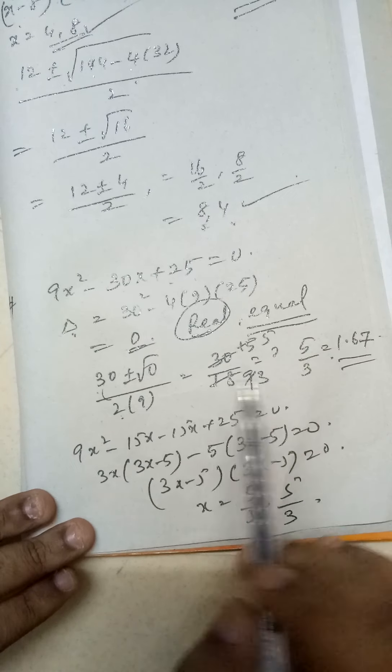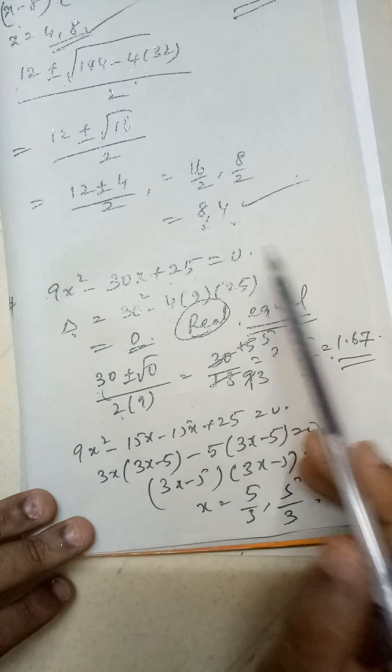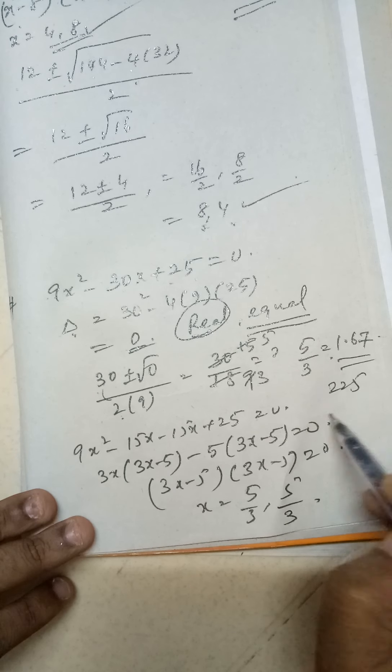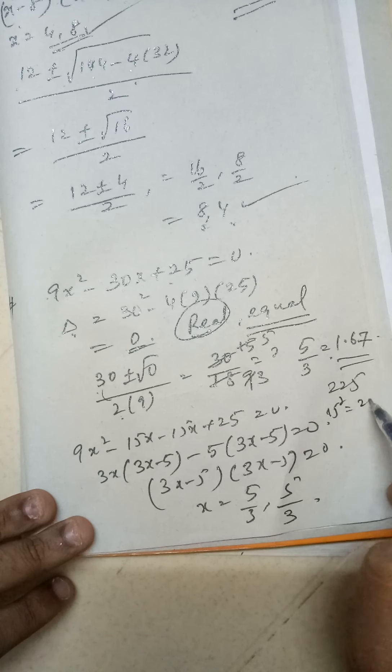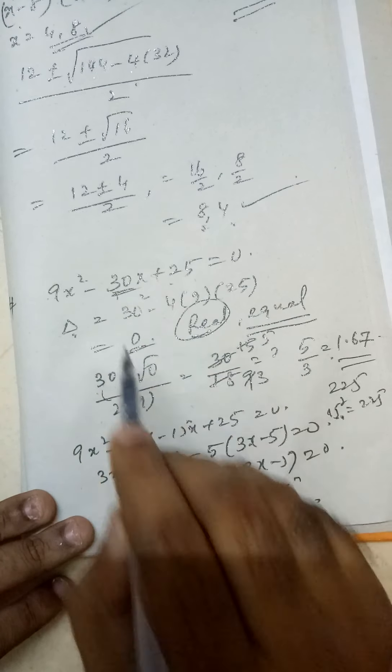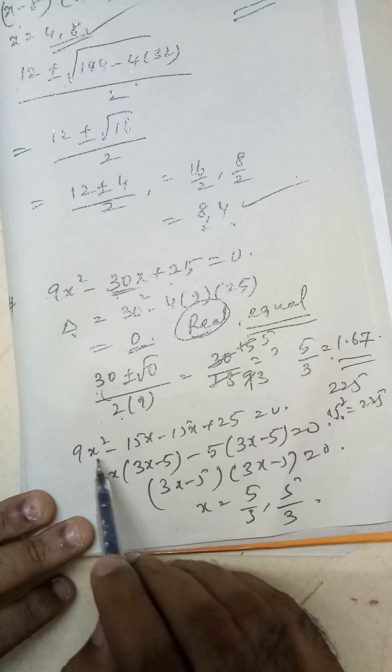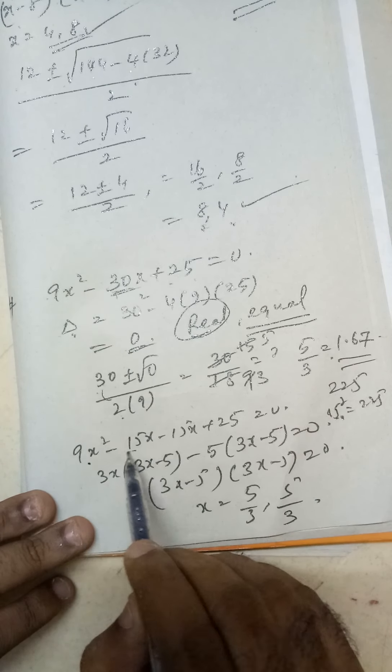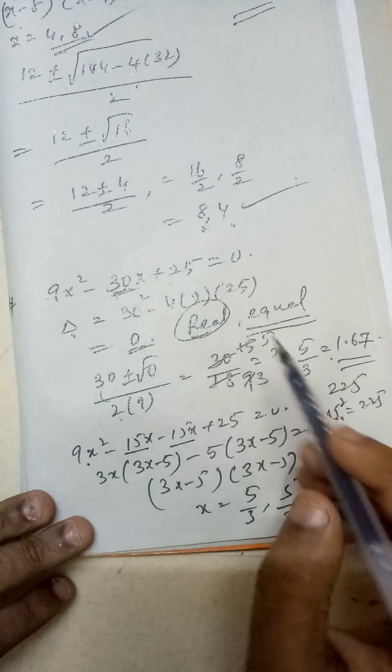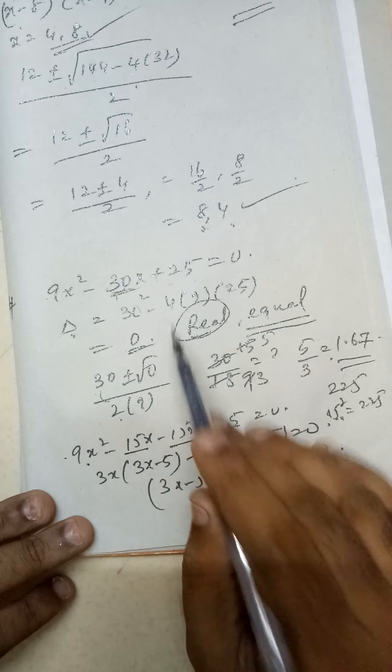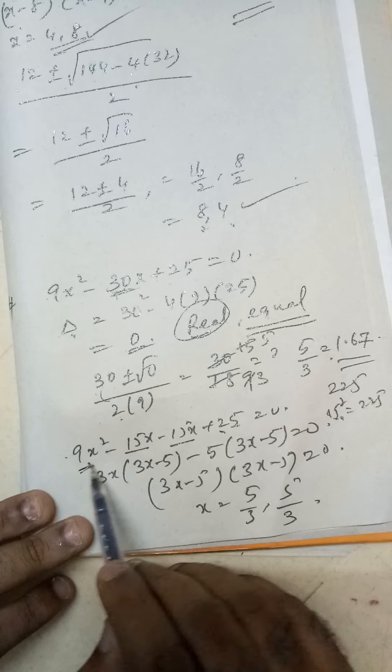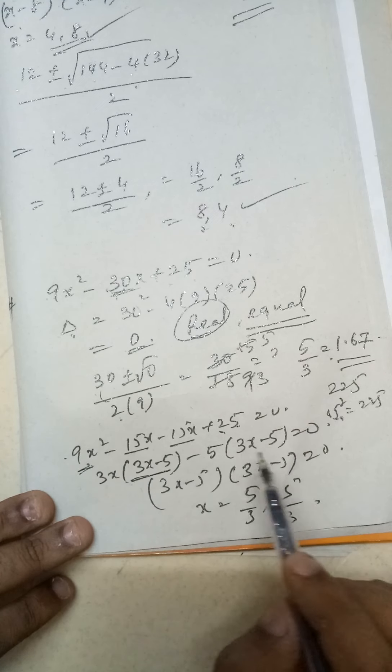How? You will multiply - see, 9×25 = 225, and you know that 15² = 225. But 15 + 15 = 30. So you can write it as 9x² - 15x - 15x = -30x. And 25×9 = 225.